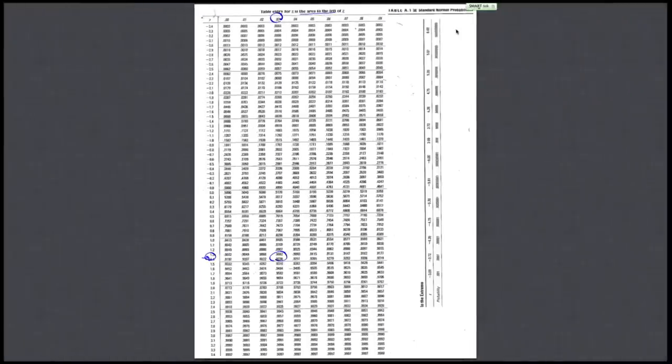So now we want in the middle of the table, the areas to the left, we want to get as close to 0.98 as we possibly can. So I'm moving along here, finding 0.98. How close can we get to 0.98? 2.0, we're kind of in between these two here. 2.05 and 2.06, the closest one is going to be 2.05. So that's the closest value for z.